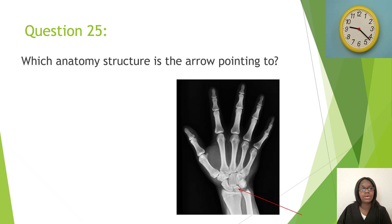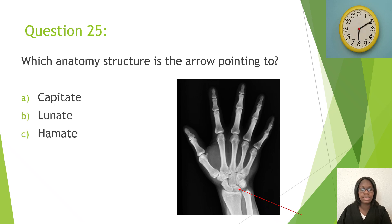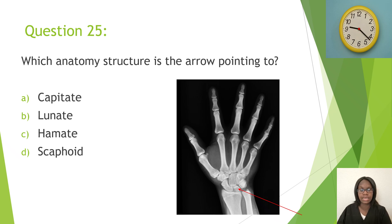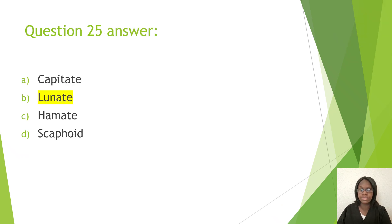Question twenty-five: Which anatomy structure is the arrow pointing to? A, capitate; B, lunate; C, hamate; D, scaphoid. The correct answer is B, lunate.